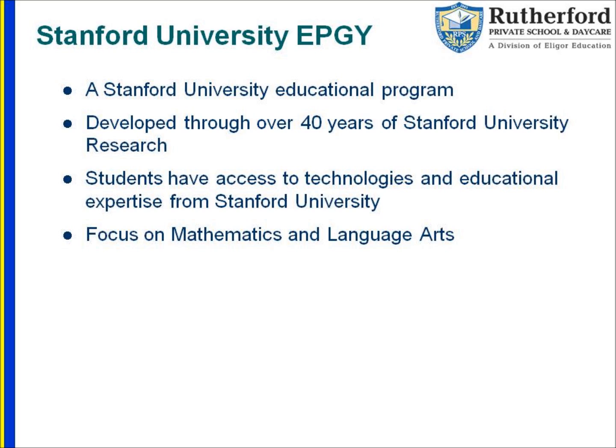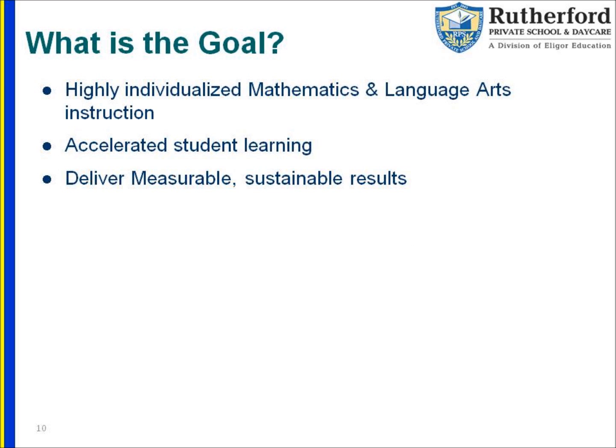What's also amazing about this program is that students have access to technologies and educational expertise from Stanford University that they otherwise may not have. The program has a strong focus on math and language arts, also known as English. When Stanford University was designing the program, they realized it was very important to take into account that every student is unique in the way they learn, retain information, and apply that information. So they set out to create a program that was customized and individualized to every single student, that would accelerate student learning dramatically, and that delivered measurable, sustainable results over time.